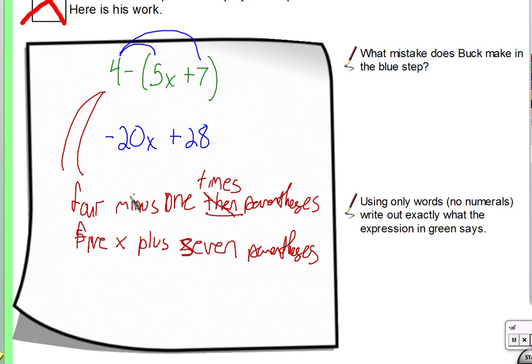Right? Or, 4 plus, 4 plus negative 1. Okay? 4 plus negative 1 times parentheses, 5x plus 7. What I'm trying to get you to see is you see a number near some parentheses. You just go for it. You just distribute. Okay? That shows that you have experience distributing. That you've been in class and you've been paying some attention. But you're not paying attention to why we distribute. Why do we distribute?